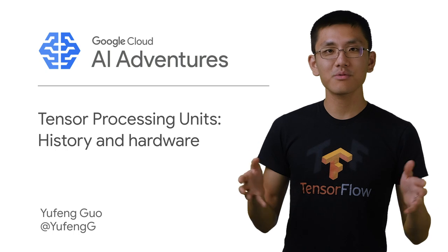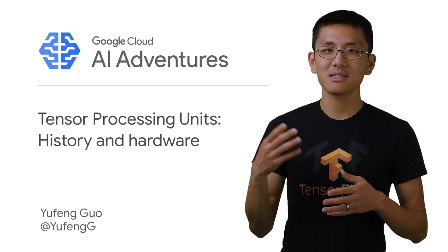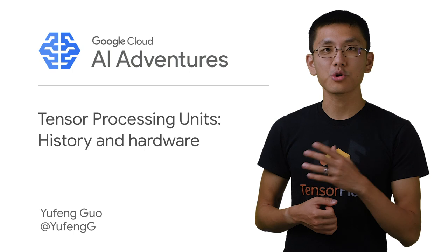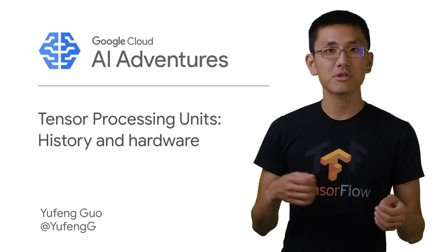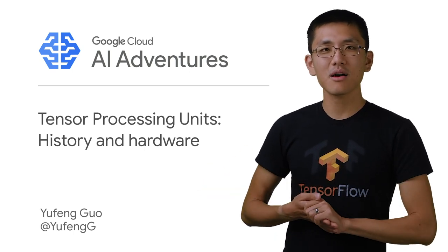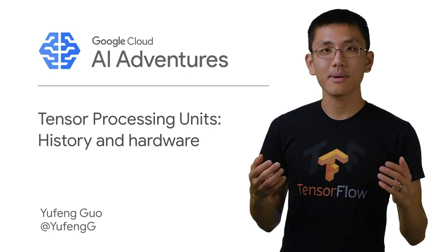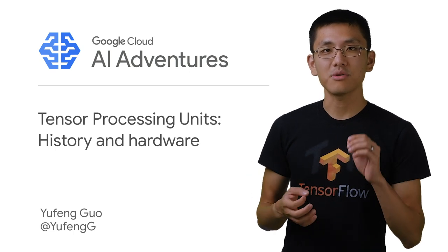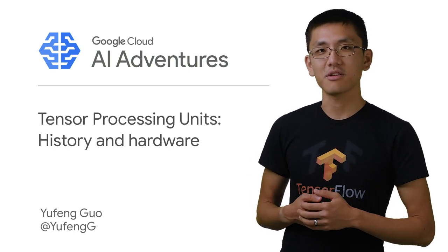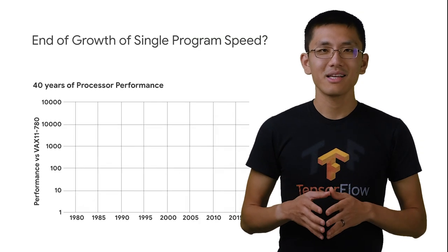In the first episode, we'll look at the original TPU, its design, and how it came to be used in everything from Google Photos to Google Translate. Then in the second episode, we'll talk about TPU v2 and v3, and learn about how they work to enable the next generation of machine learning.